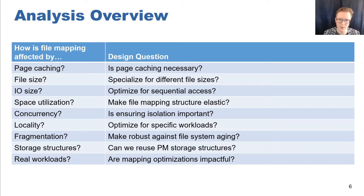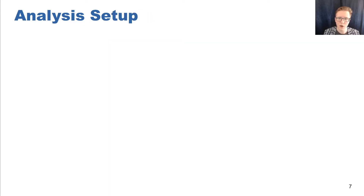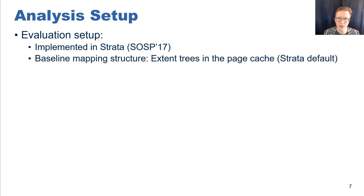We rigorously examine many factors of file system workloads to see how file mapping structures perform under a variety of scenarios — for example, analyzing the impact of fragmentation and different workload characteristics and access patterns. In this talk, I will discuss two key questions: whether file mapping structures should be cached in the page cache, and whether file mapping optimizations have a noticeable impact on real workloads. We perform our analysis using the Strata file system, the state-of-the-art persistent memory file system still used in recent research, using Strata's default extent tree mapping structure with page cache as our baseline.